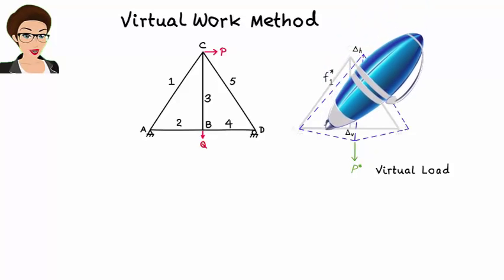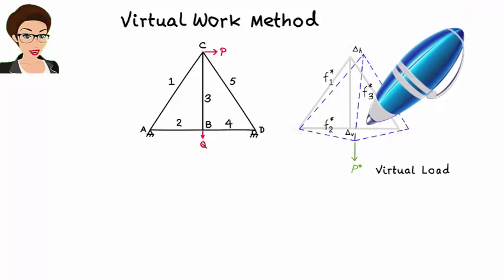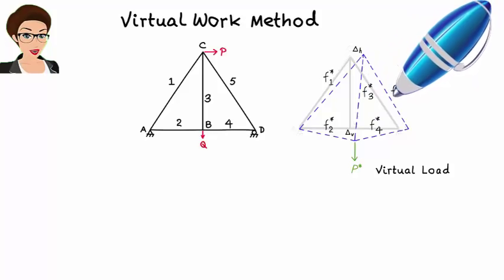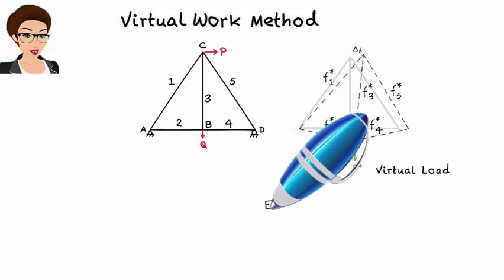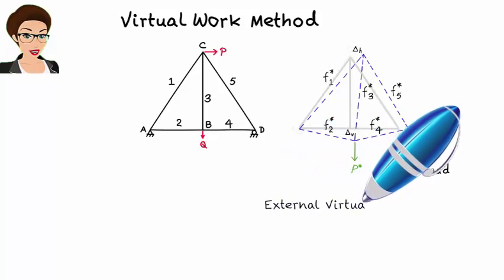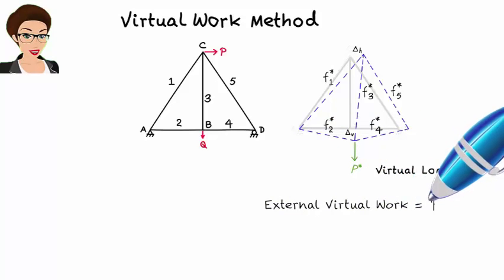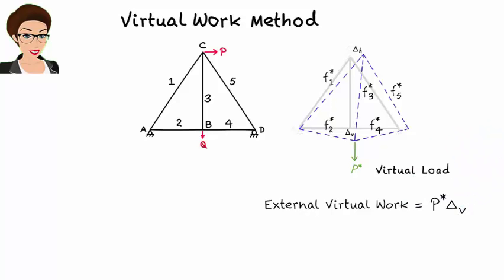Let's refer to these virtual forces as f-star-1, f-star-2, and so on. Since there are five members in the truss, there are five virtual member forces. Note that p-star is applied in the direction of delta-v. Since this imaginary load travels through the real displacement, it does imaginary or virtual work. The work done equals p-star times delta-v. We call this external virtual work, since it is done by an external virtual load.